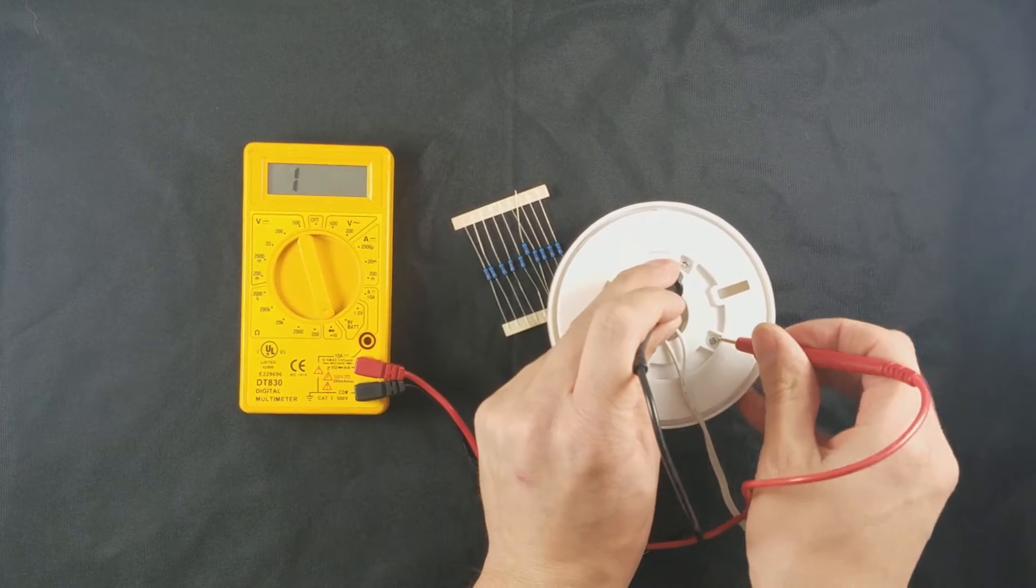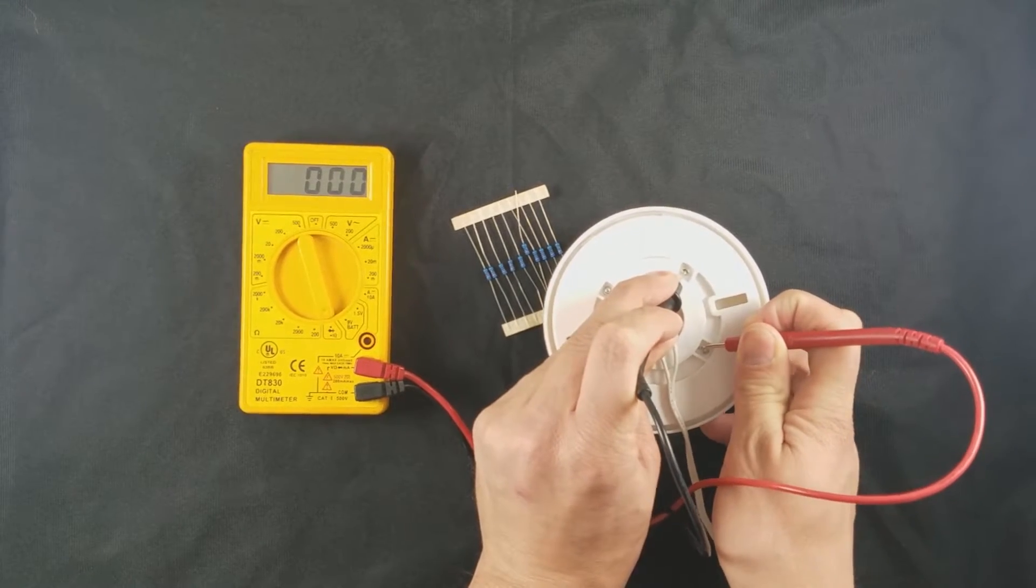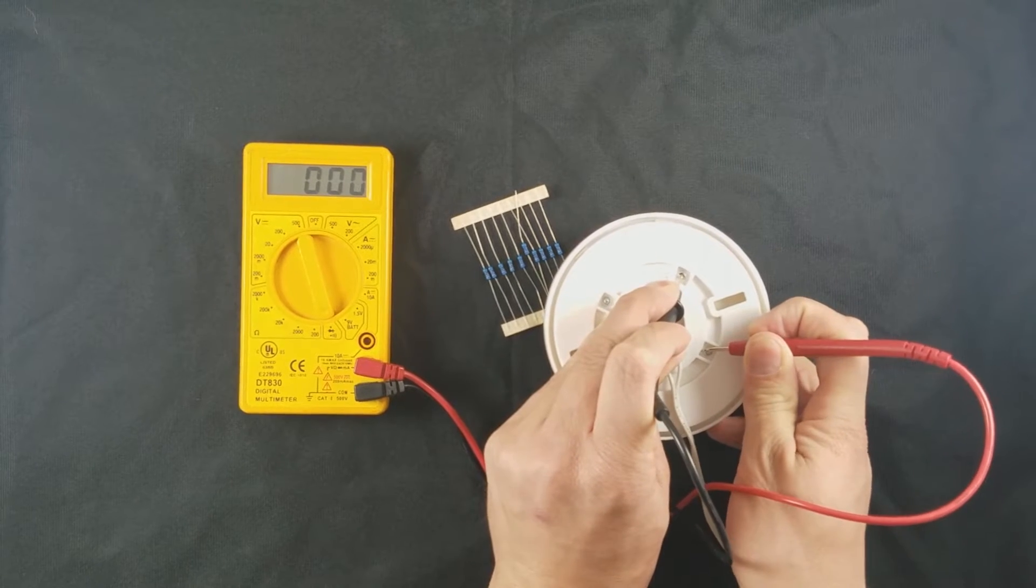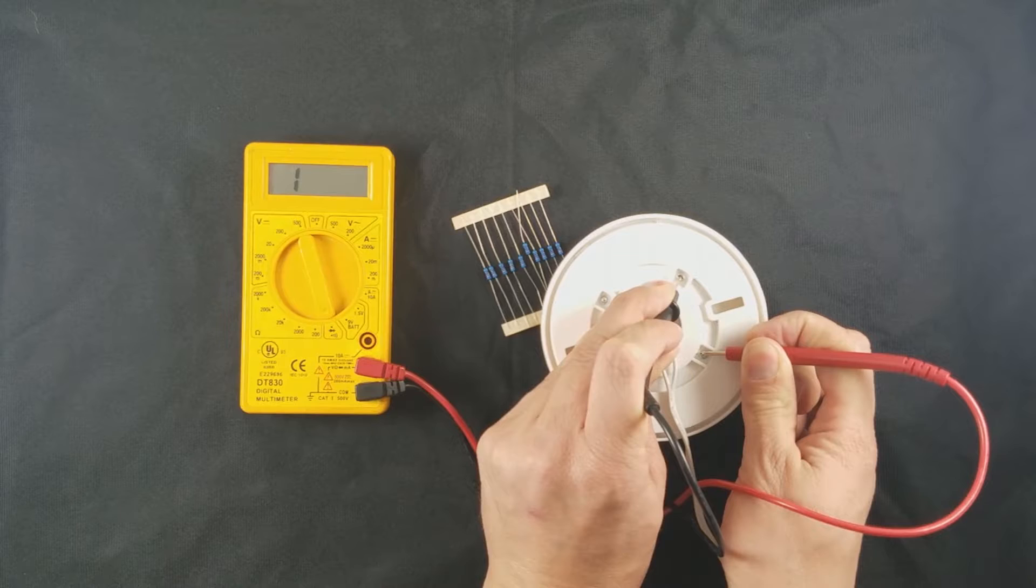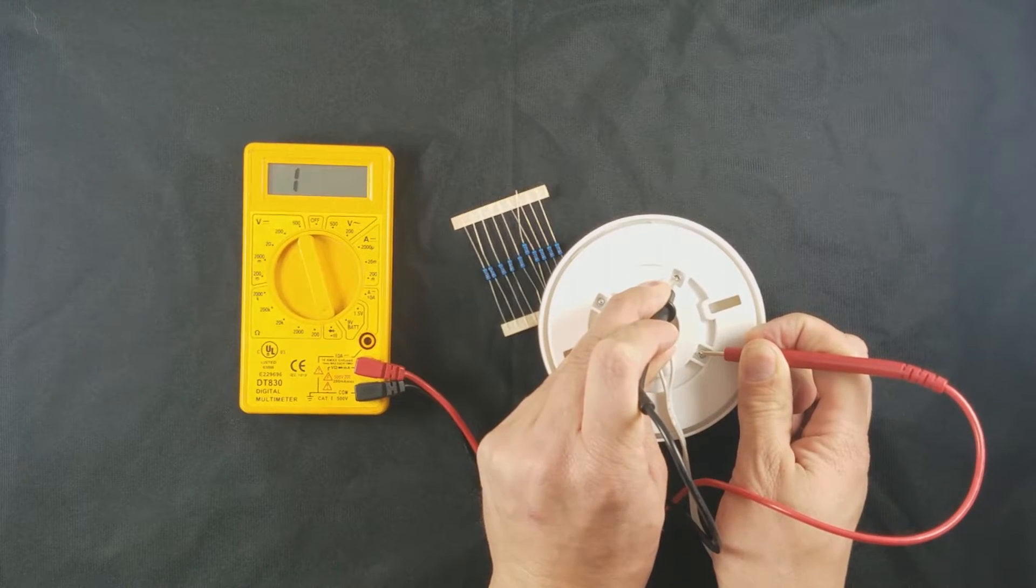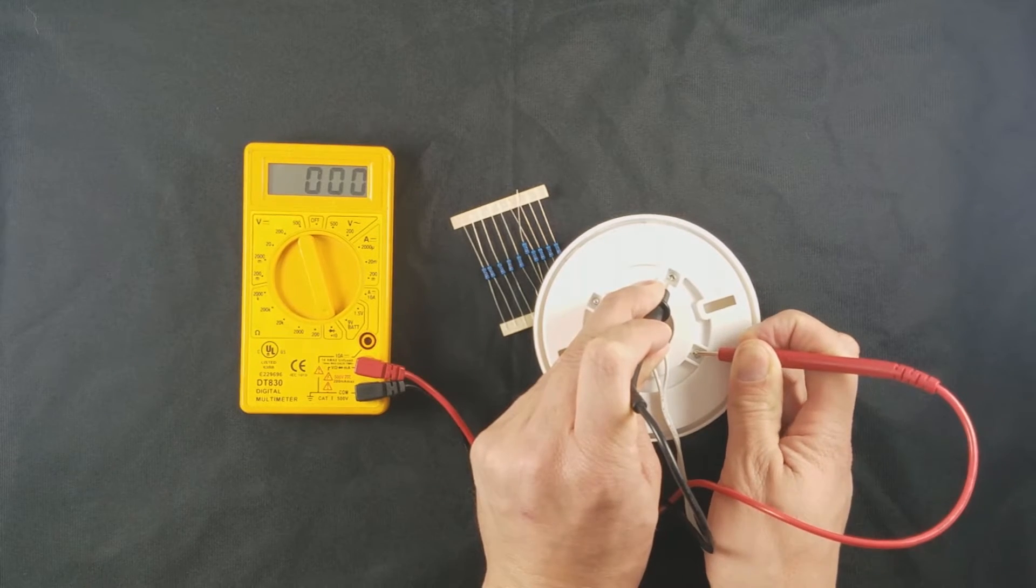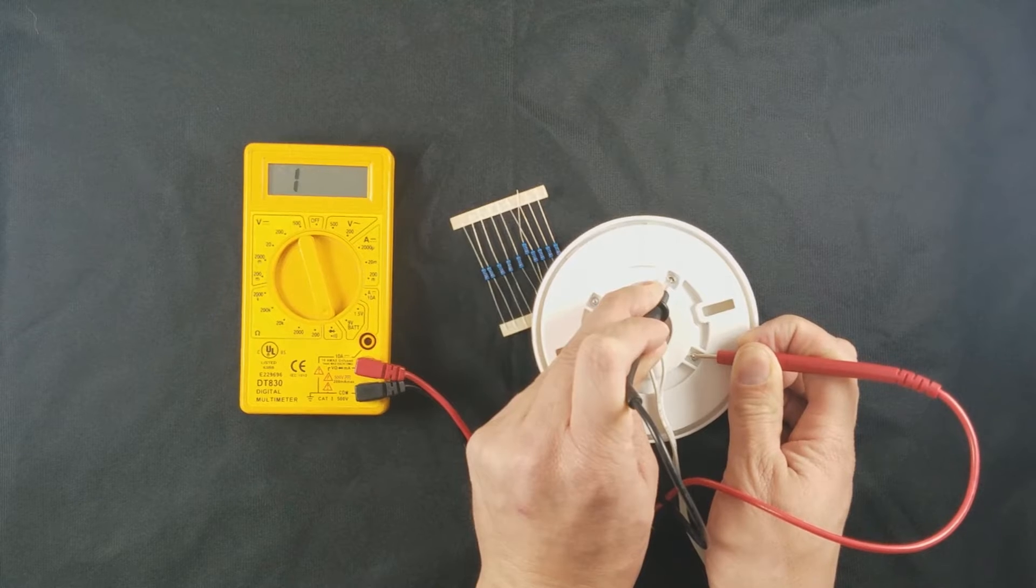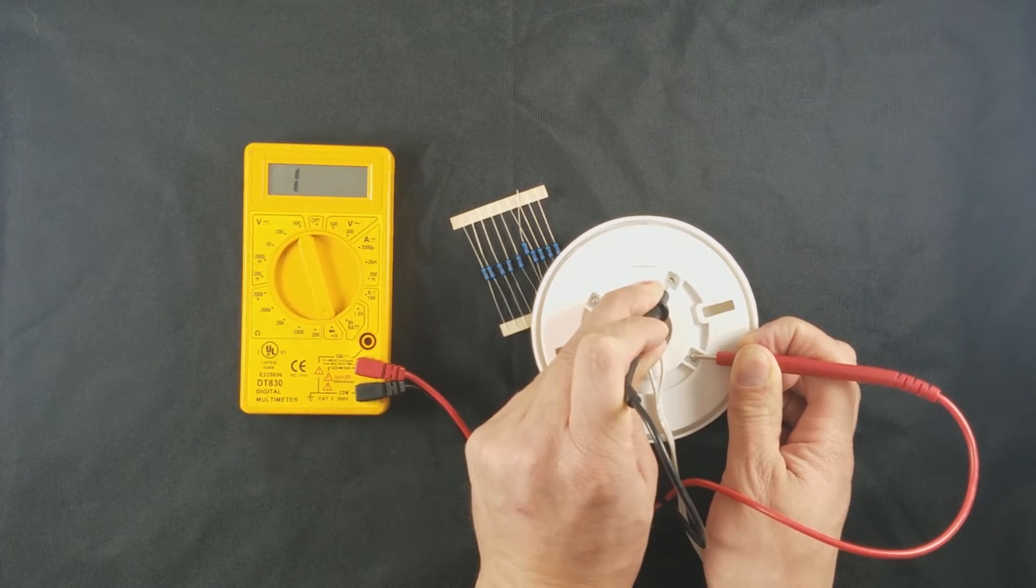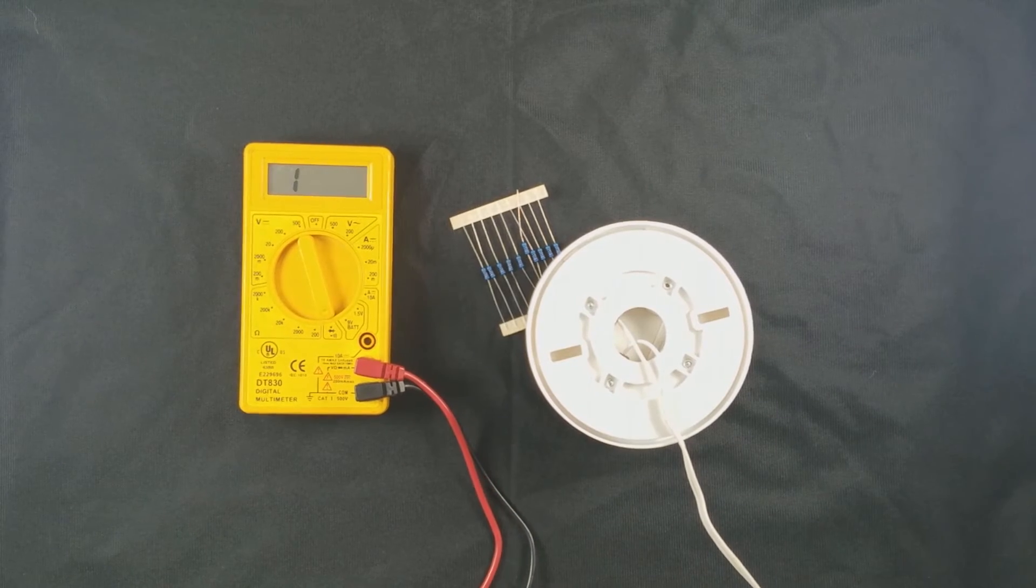Let me show you this again. I'm going to press the test button underneath. You can see while it's in alarm, it goes to open. Right now it's open, and when the alarm stops, it goes back to closed. That's how you test to make sure the smoke detector is working properly.